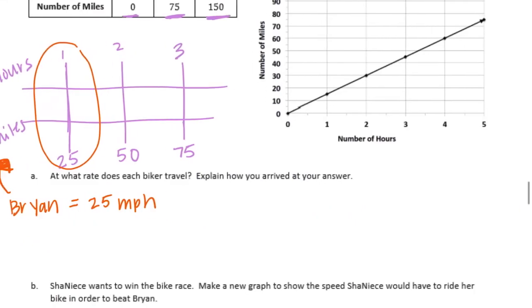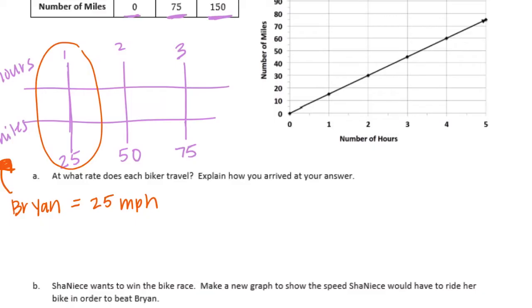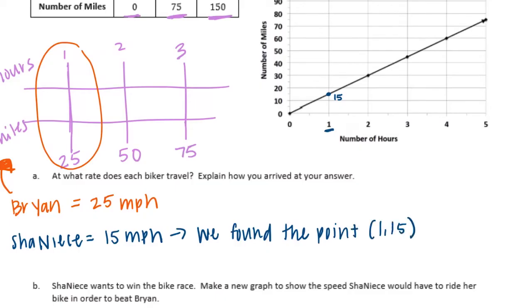So then Shanice, we can look at her chart over here. And we see that 1 hour takes, it's right there in the middle, so it looks like 15 miles. So Shanice goes 15 miles per hour. And we can say, we found the point 1, 15, which represented 15 miles in 1 hour.